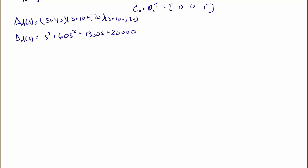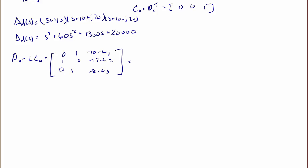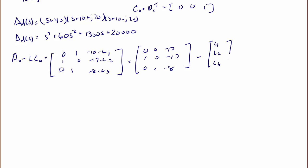Now let's find A_0 minus L*C_0. This equals [0, 0, -10-L1; 1, 0, -17-L2; 0, 1, -8-L3]. This comes from [0, 0, -10; 1, 0, -17; 0, 1, -8] minus [L1; L2; L3] times [0, 0, 1].